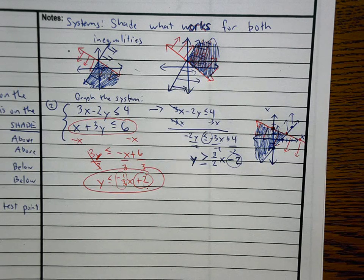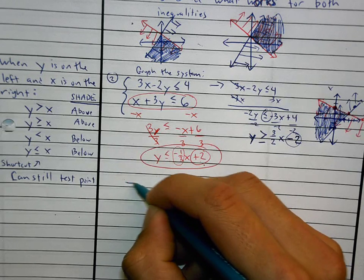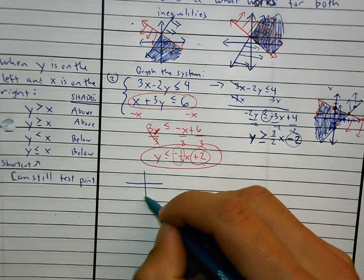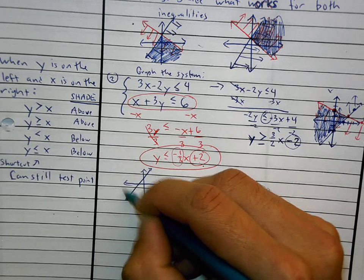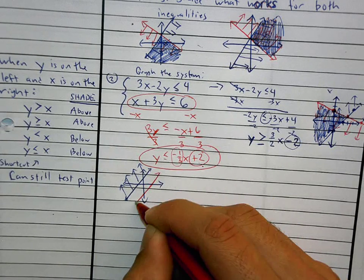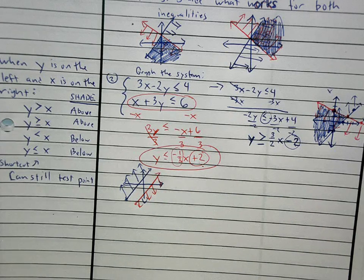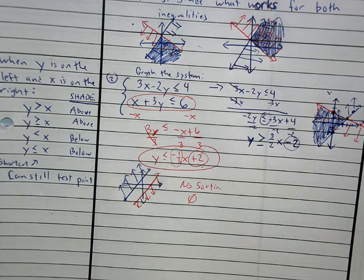The last thing we're going to talk about is one possible trick question. What if you had two graphs where you were shading above one line and below another, and they do not intersect — they're going in opposite directions? What works for both? There is a possible no solution with systems of inequalities as well. Okay, we'll end our notes right there.